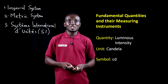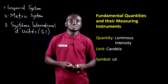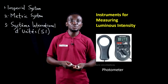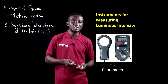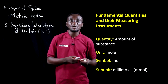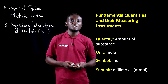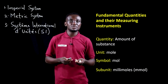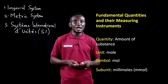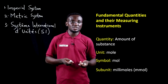Finally, when it comes to luminous intensity, the unit is the candela, with the symbol cd. We use a photometer to measure luminous intensity. The amount of substance is measured using the unit mole, with the symbol mol, and the subunit is the millimole.